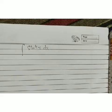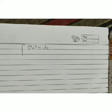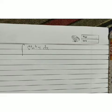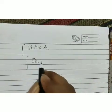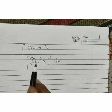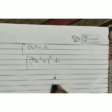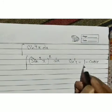Now we have a more complex problem: integration of sin⁴x dx. This looks difficult, but again we use the same concept. We write sin⁴x as (sin²x)², then substitute sin²x = (1 − cos 2x)/2, giving us ∫[(1 − cos 2x)/2]² dx = ∫(1/2 − cos 2x/2)² dx.